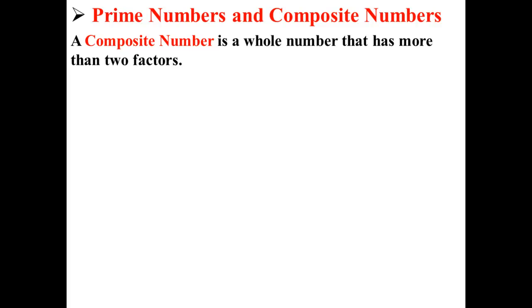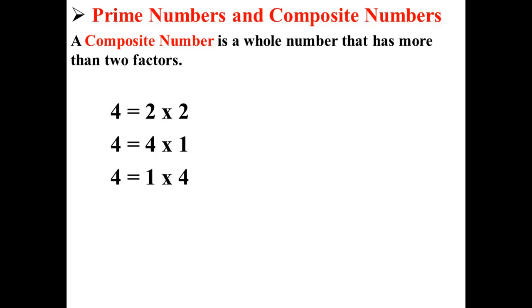For example, four is a composite number. Its factors are one, two, and four. Because it has more than two factors, it is a composite number and not a prime number.